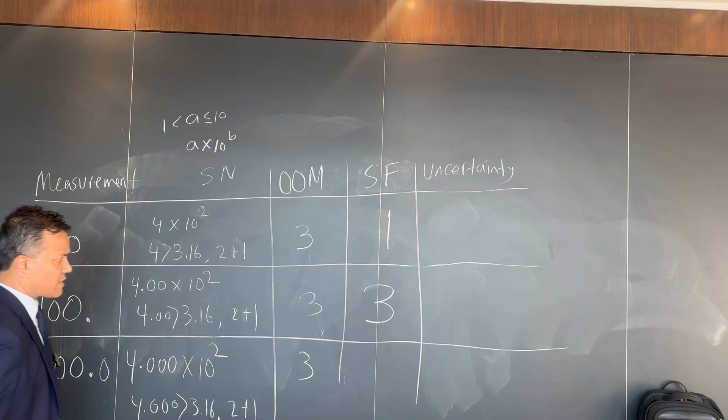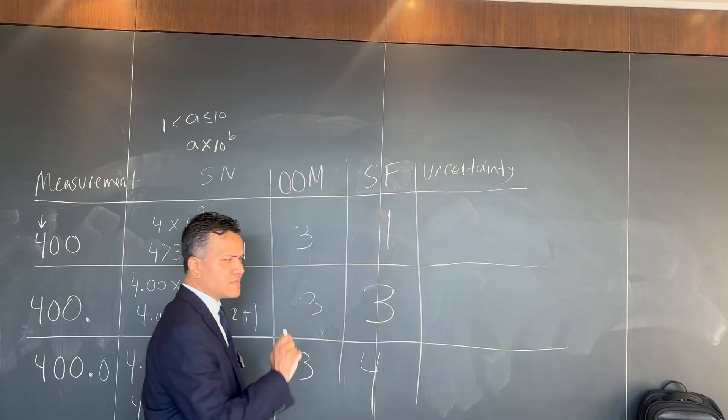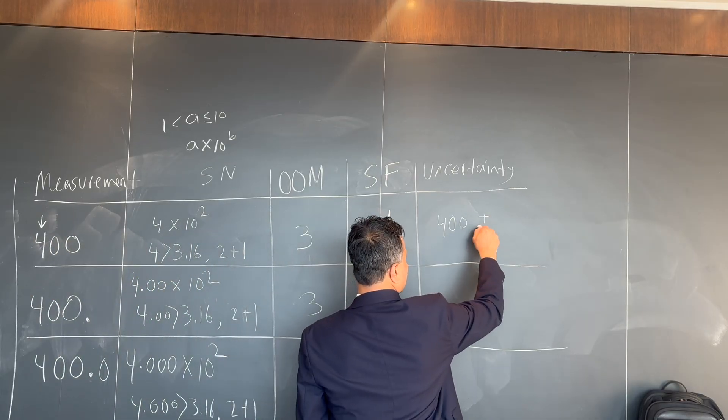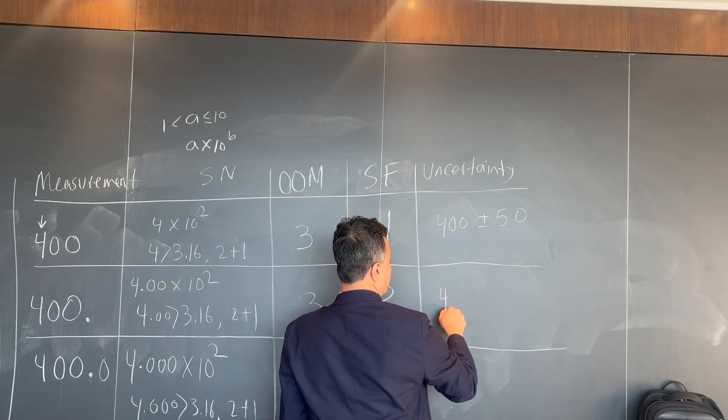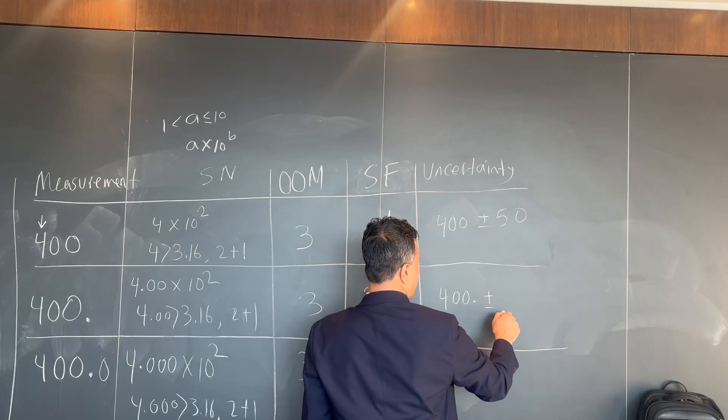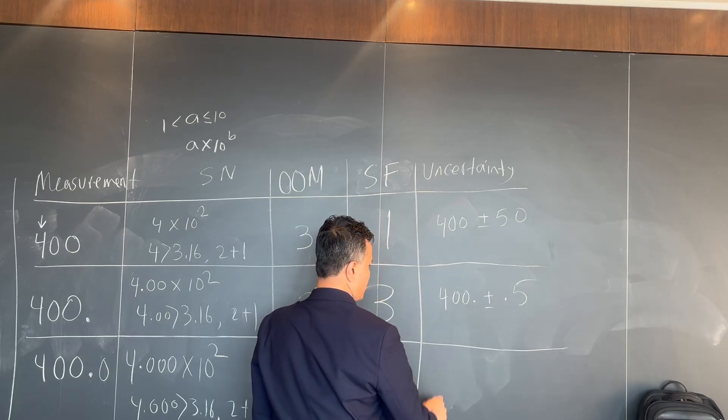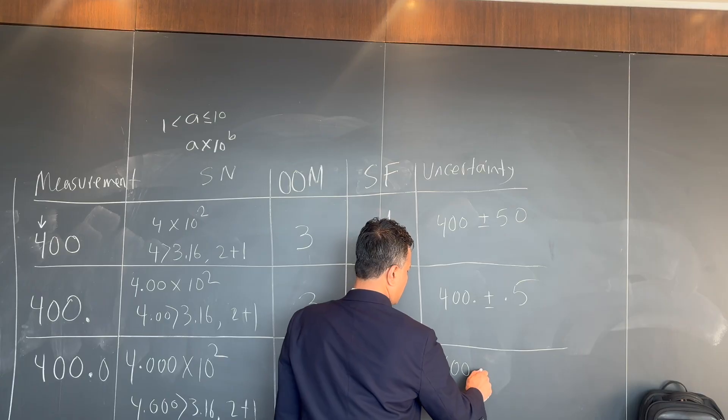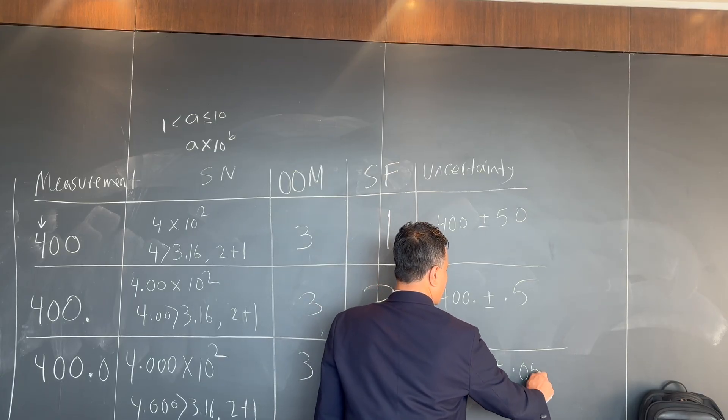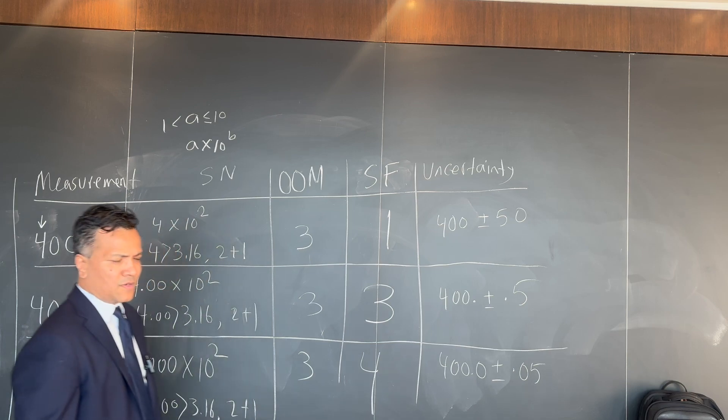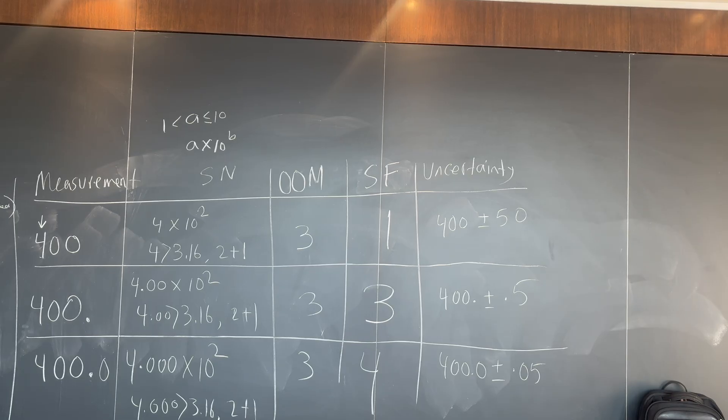Now we're going to do uncertainty. How can you do uncertainty? Plus minus 50. I'm going to write 400 plus minus 0.5, and I'm going to explain. What is the last reliable number? Four. However, I'm not going to write four. This is one, this is ten, this is 100. Four is the 100 place, so I'm going to write 100. So this is 50.